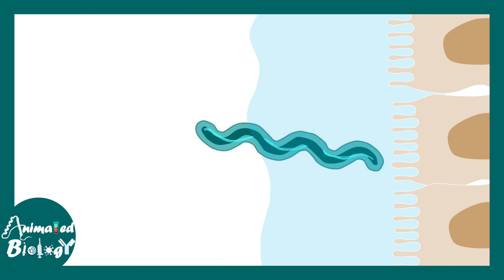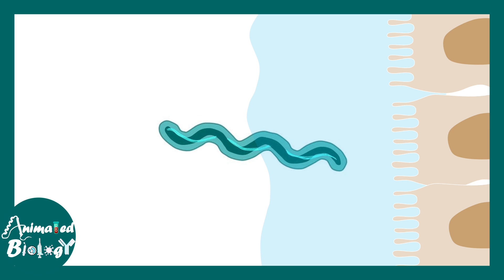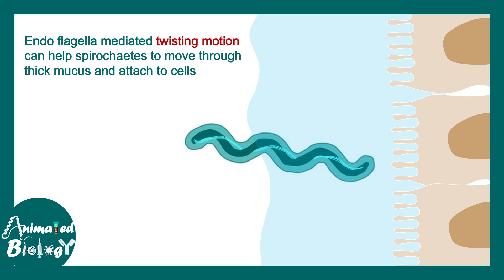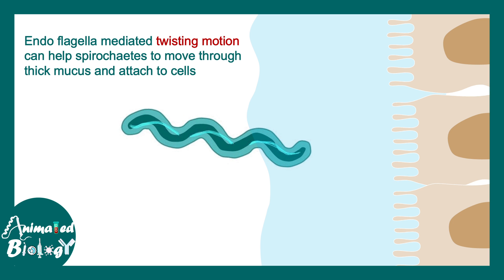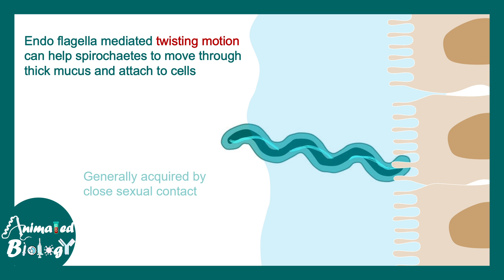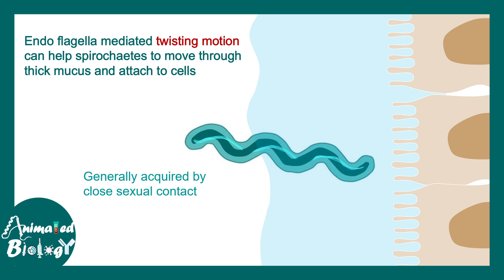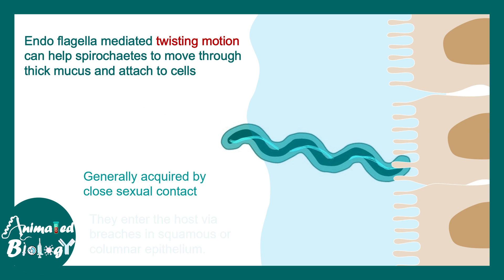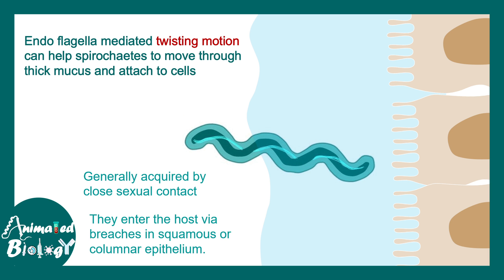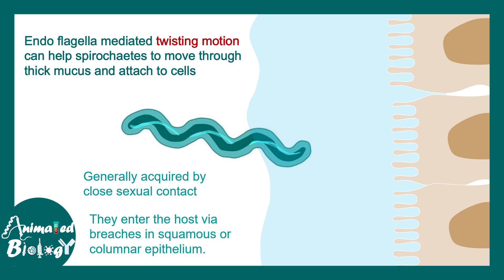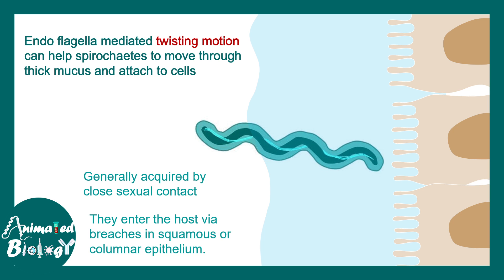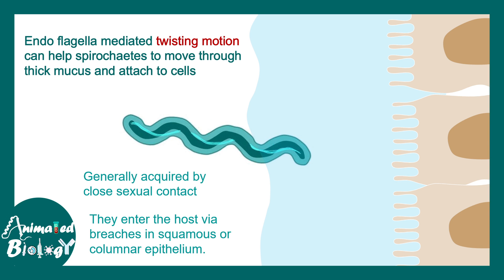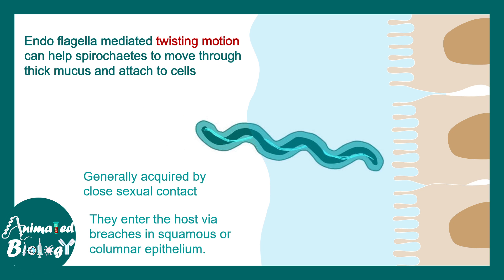The Treponema pallidum bacteria can make its way through thick mucus via twisting-like motions, and the endoflagella helps in this process. They are generally acquired by direct contact during sexual activity. They can enter the host via any kind of breach in the squamous or columnar epithelium — for example, a small breach in the skin that contacts a fluid containing Treponema allows it to enter the body.